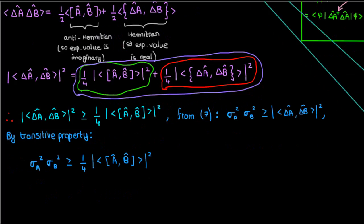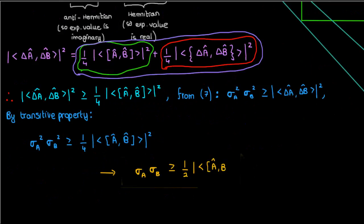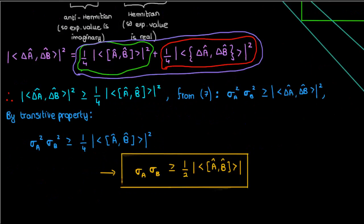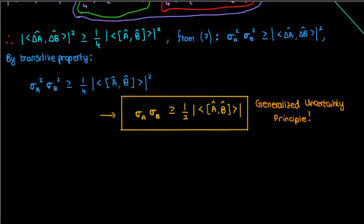Taking the square root of both sides, we finally arrive at σ_a · σ_b ≥ ½|⟨[â,b̂]⟩|. This is called the generalized uncertainty principle. It states that the product of the uncertainties of two observable quantities a and b is greater than or equal to half the magnitude of the expectation value of the commutator of the corresponding Hermitian operators.